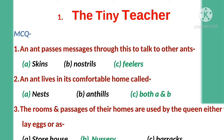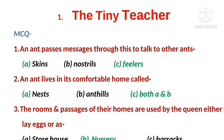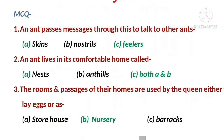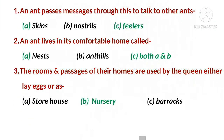MCQ 1: An ant passes messages through this to talk to other ants. The right option is C - feelers. MCQ 2: An ant lives in its comfortable home called C.